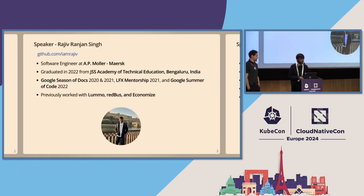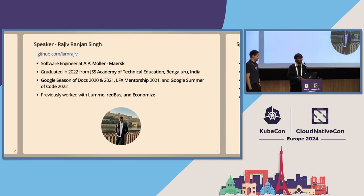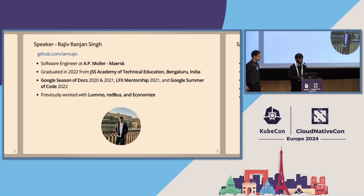My name is Rajiv. I'm originally from Bihar, India, and I currently work as a software engineer at EpiMolar. I'm part of the platform engineering team, located in Bangalore, India. I did my college in Bangalore from JSS College of Engineering. I have a degree in information science and engineering, and I started working with Go in 2020.